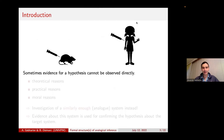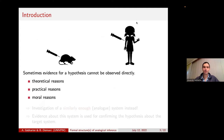Why analogical inference? That becomes interesting whenever we are interested in a hypothesis about something but cannot collect direct evidence for that hypothesis. There might be theoretical, practical, or moral reasons why we cannot access direct evidence — maybe we don't have the proper devices, they're too expensive, or it's morally problematic. Whenever we face such a situation, we can try to investigate a sufficiently similar analog system instead of the target system.